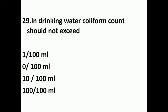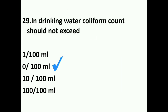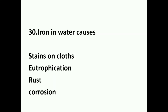Coliform count in drinking water should not exceed 0 per 100 ml — E. coli bacteria are used as indirect indicators of pathogens, and the answer is 0 per 100 ml. Iron in water causes stains — iron appears as red color and causes staining in plumbing fixtures.